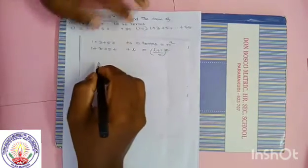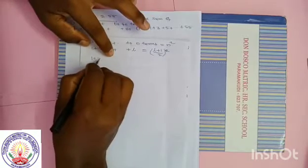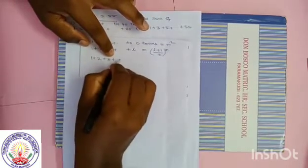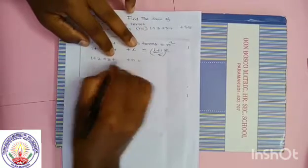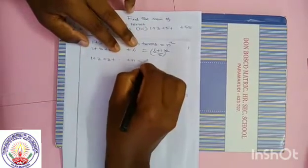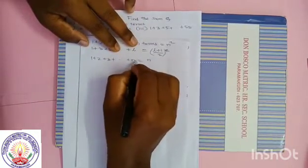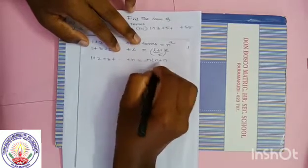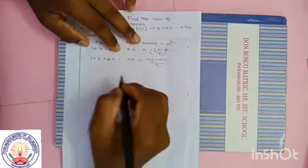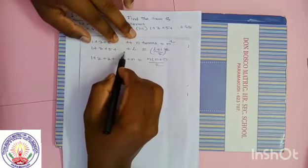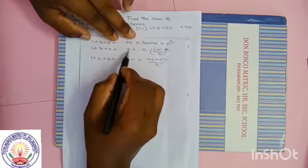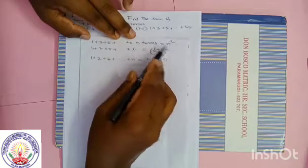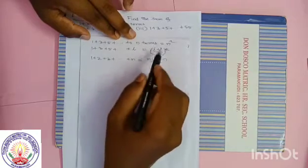Another one. We have studied the sum of first n natural numbers: 1 plus 2 plus 3 plus dot dot dot plus n is equal to n into n plus 1 divided by 2. Sum of first n natural numbers and sum of first n odd numbers — we have these formulas.